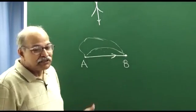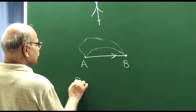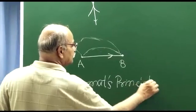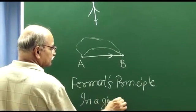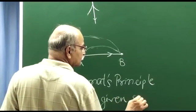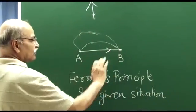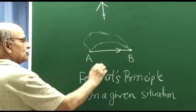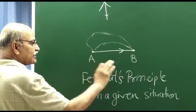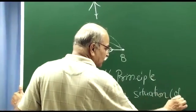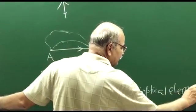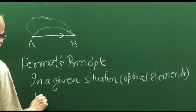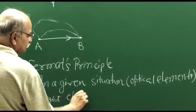This simple statement is a great principle known as Fermat's principle. It's not only true for homogeneous isotropic media — even if you have lenses, mirrors, or other optical elements, if you are given two points, light has to choose a path which takes the least time in the given situation. That means all your optical elements — mirrors, lenses, prisms — are given, and light chooses its path accordingly.